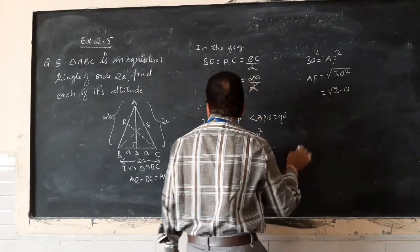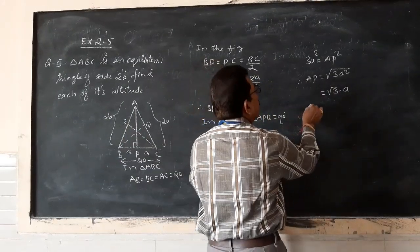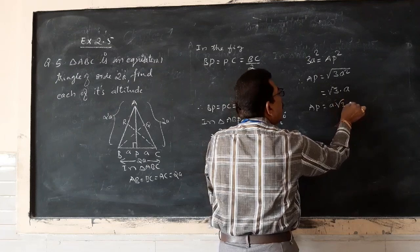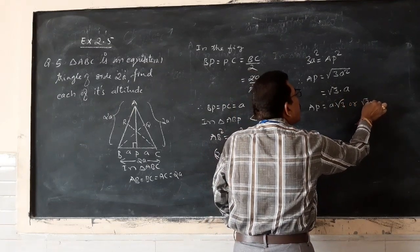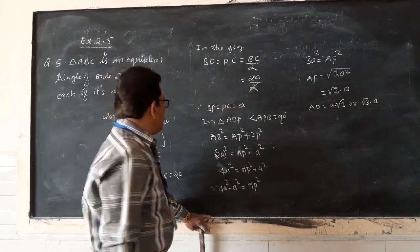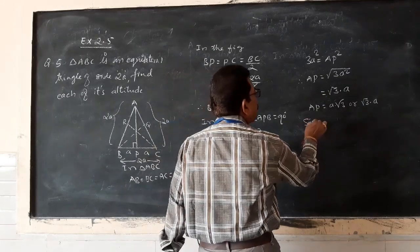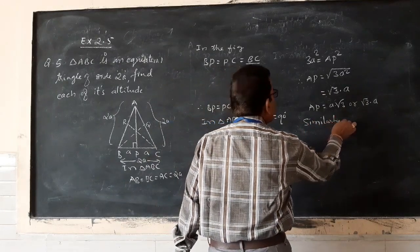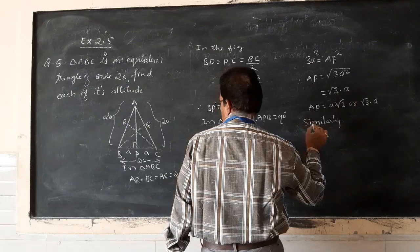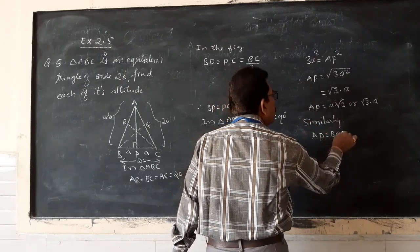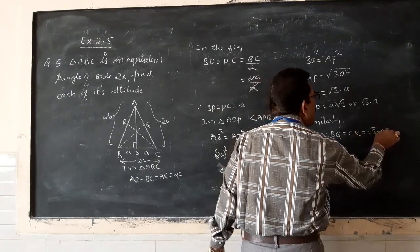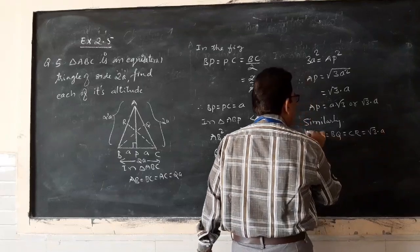Therefore AP = √(3A²) = A√3. So AP equals A root 3. Similarly, the other altitudes AP = BQ = CR = A√3.